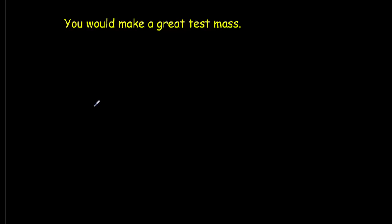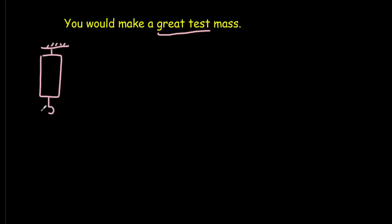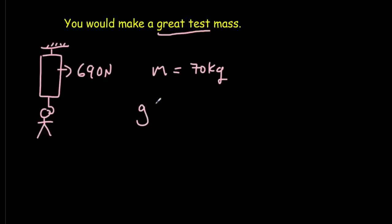You would make an excellent test mass. We need test masses to measure gravitational fields in the same way that we need test charges to measure electric fields. We would get one of these big Newton scales, hang it up, put a big hook on it, and hang you from that hook to measure your weight. Let's say it came out to be 690 Newtons, and your mass is 70 kilograms. We'd work out the gravitational field — the force per unit mass — as 690 divided by 70, giving that familiar value of 9.8 Newtons per kilogram.